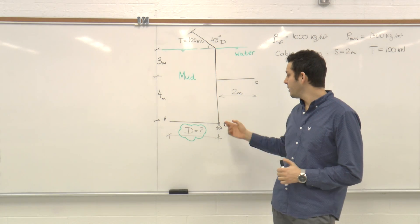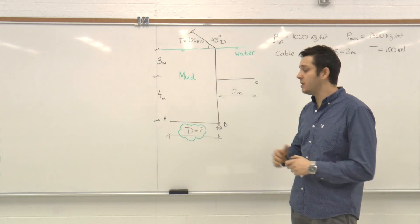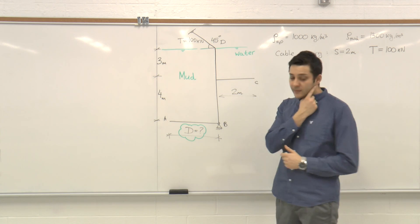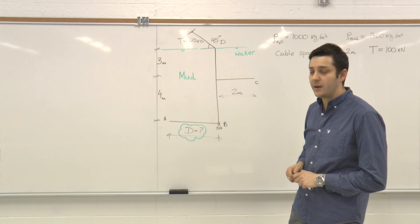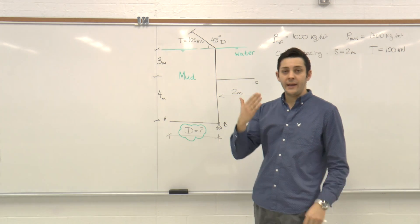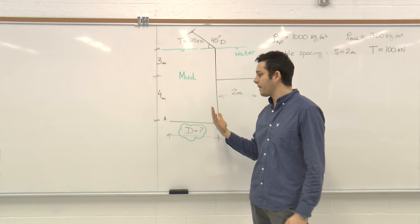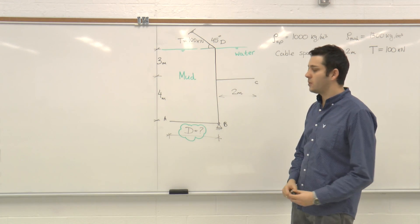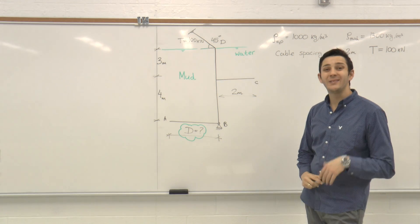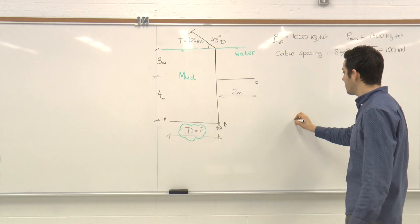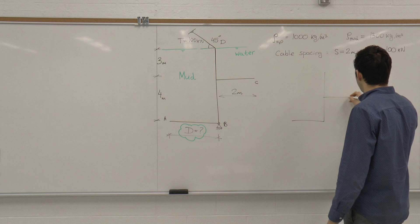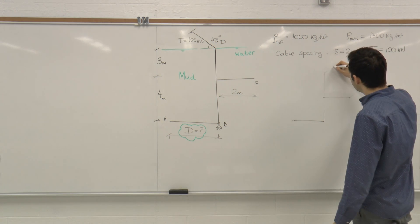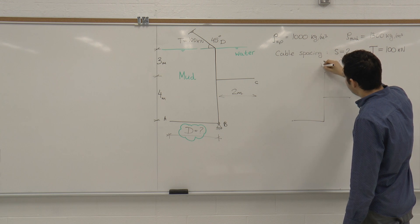The structure separates water and mud and the density of each is known. For these kinds of questions we first need to ask ourselves: are the forces acting on the structure continuous or concentrated? The cable is a concentrated force every two meters. About the pin support, nothing is known about the spacing, which means that support is a continuous one. Next step is to show the pressure diagram. It's useful to show the 3D sketch — every two meters we have a force representing the tension in the cable.